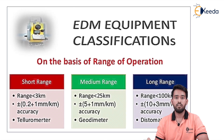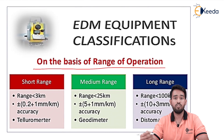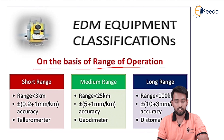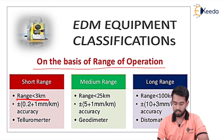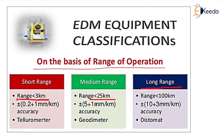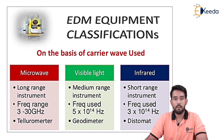EDM is widely classified on the basis of range of operation. There are three types: short range, medium range, and long range. For short range, the range is limited to less than 3 kilometers, with accuracy of plus or minus 0.2 mm per kilometer. For medium range, it is 3 to 25 kilometers with accuracy of 5 mm per kilometer. For long range, the range varies from 25 to 100 kilometers with accuracy of 10 mm per kilometer.